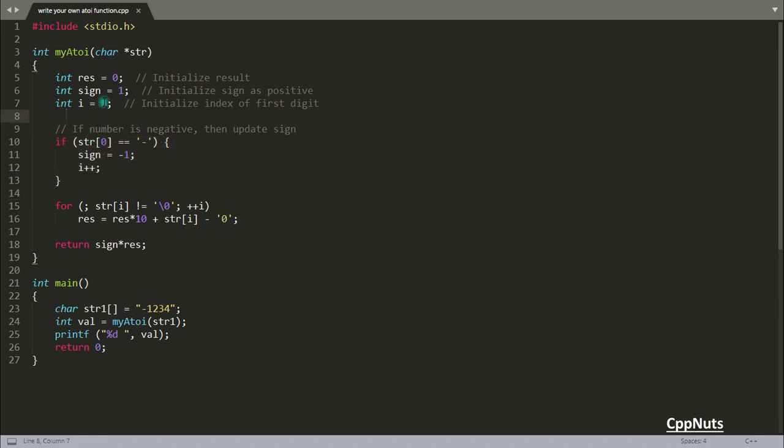If your input is minus, then str[0] will be holding this character. So the 0th location will have this particular character. So yes, it is true, we will do sign equals minus 1, and we will increment our pointer i. So now we will point to the next location. Now i is 1, and we will start from 1 until we get the null.